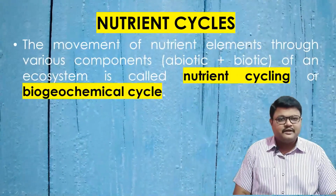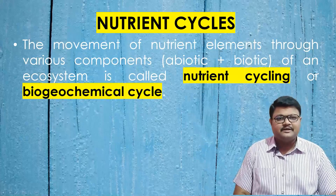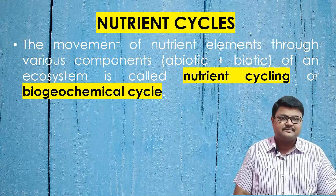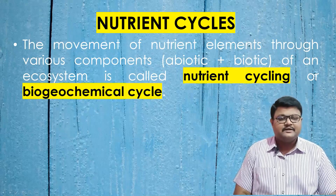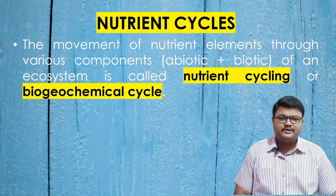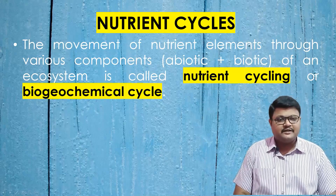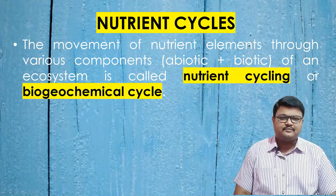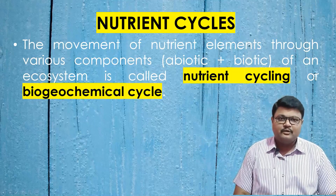Sometimes nutrients are present in gaseous form and sometimes as rock solids. These nutrients are used from the atmosphere — in the form of air, gas, water, etc. — and once released through excretion or death, they should be recycled back to the atmosphere. The movement of these nutrients from one organism to another, through biotic and abiotic intermediates, and their recycling back is called the cycling of nutrients.